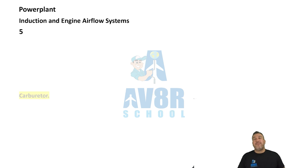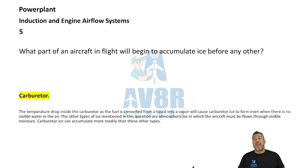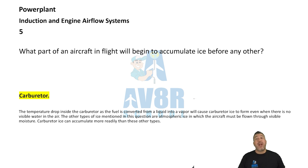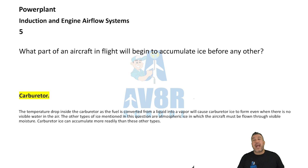Number five: what part of an aircraft in flight will begin to accumulate ice before any other? That is the carburetor. The carburetor will accumulate ice before anything else, so make sure you take care of that.